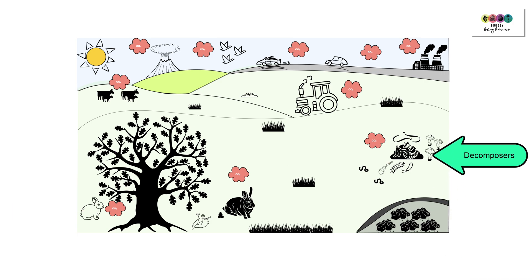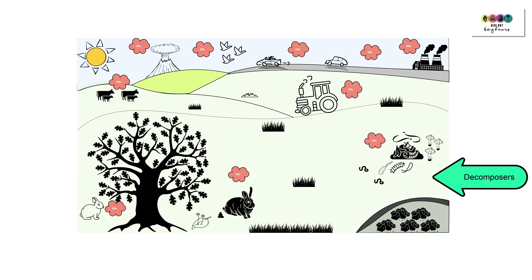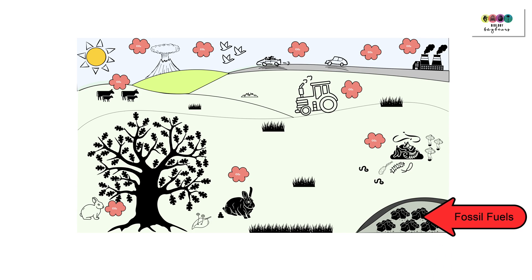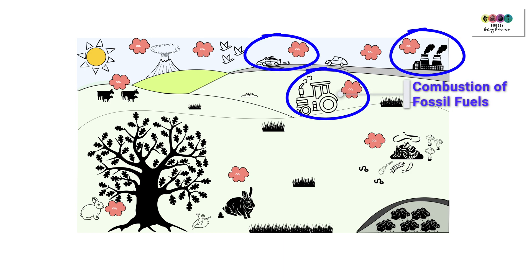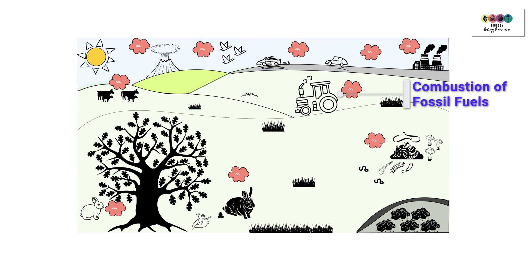Decomposers play a very important role in the carbon cycle. They're breaking down all of that organic matter that contains carbon and returning it back to the environment. However, sometimes there is incomplete decomposition, and this results eventually in the formation of fossil fuels. Remember that decomposers are living organisms, so they too respire. Combustion of fossil fuels is another way in which carbon is released or returned back to the atmosphere in the form of carbon dioxide.